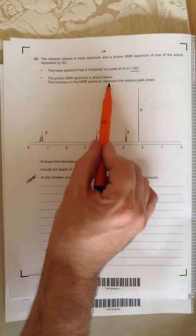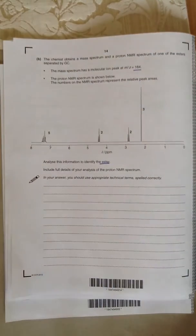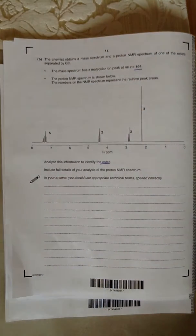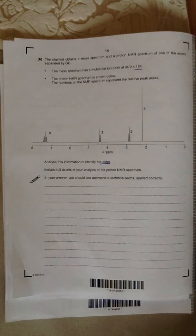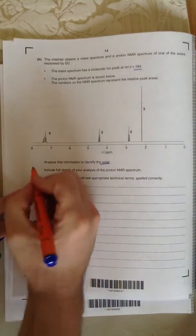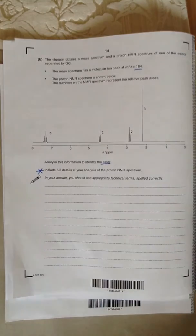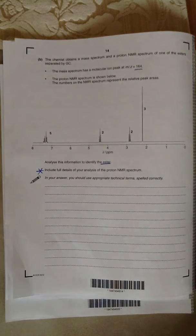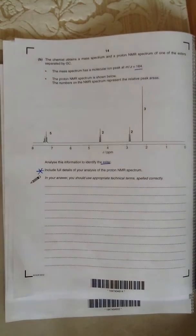The numbers on the NMR spectrum represent the relative peak areas. So remember, the relative peak areas tell you how many protons are responsible for that peak. Analyze this information to identify the ester. Include full details of your analysis of the proton NMR spectrum. So it's not enough just to be able to tell me what the compound is. You need to tell me how you've got there.